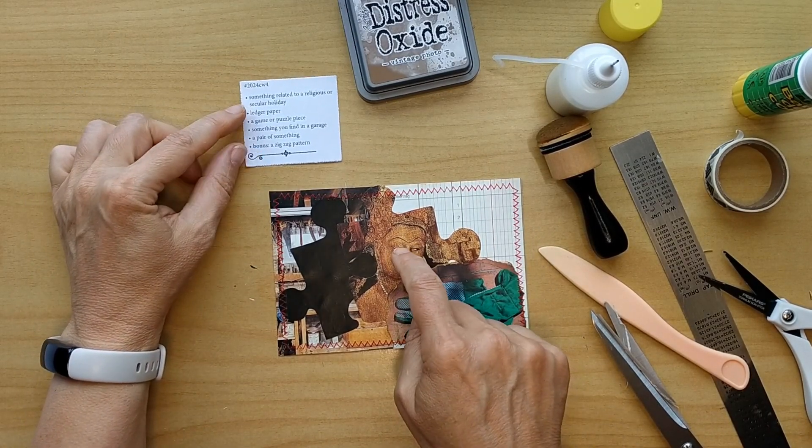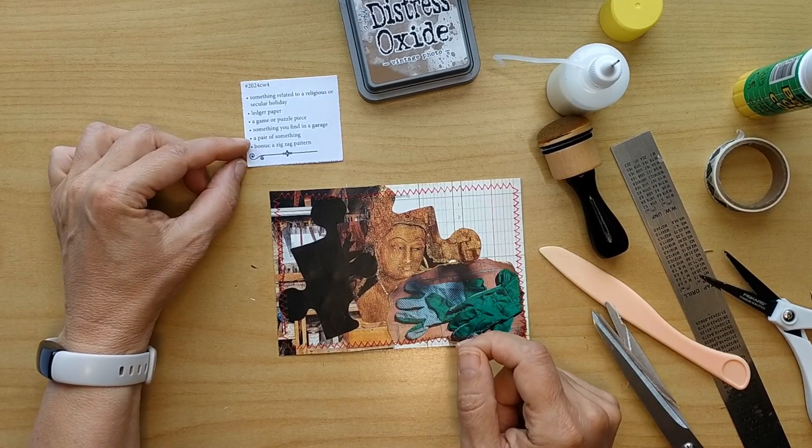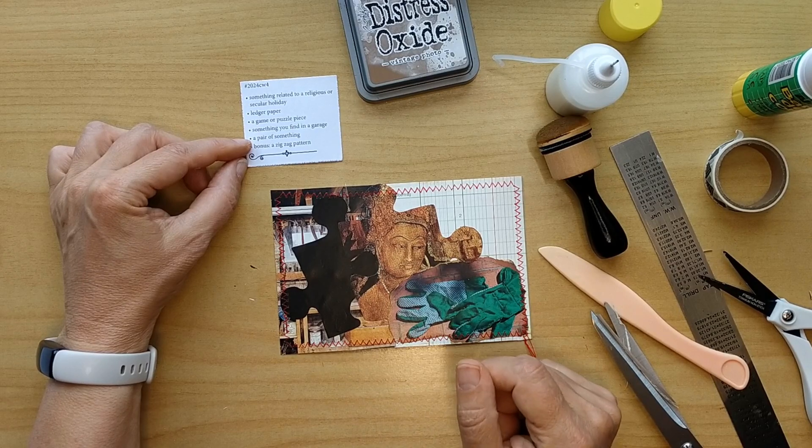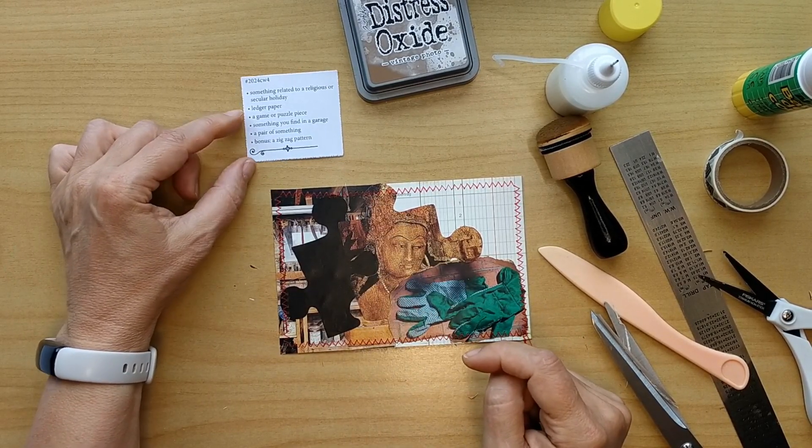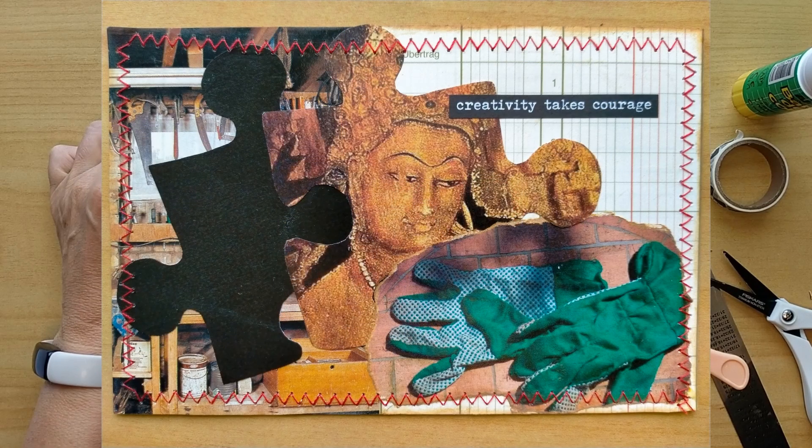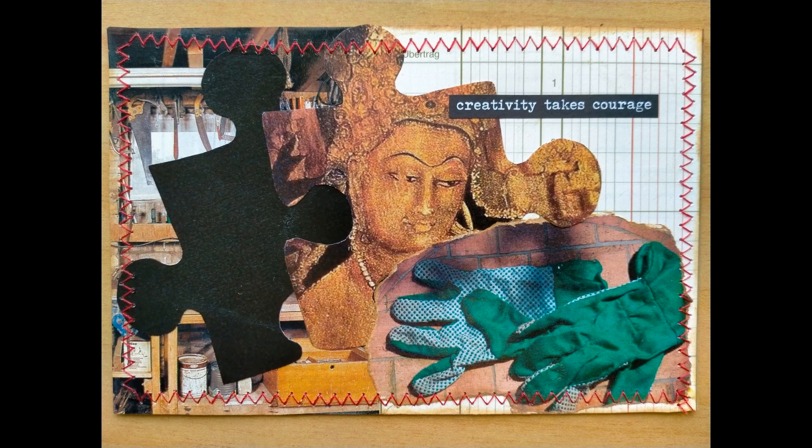So let's come back to the prompts: something related to religion, ledger paper, a game or puzzle piece, something you find in the garage, a pair of something like the garden gloves and as a bonus the zigzag pattern. And here you can see creativity takes courage was the quote I added because it really took courage this time for me.